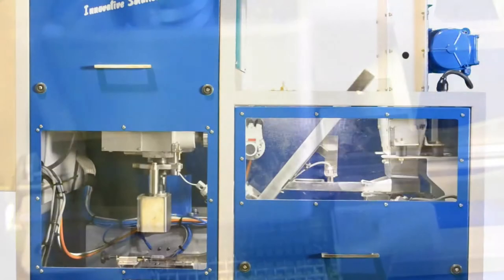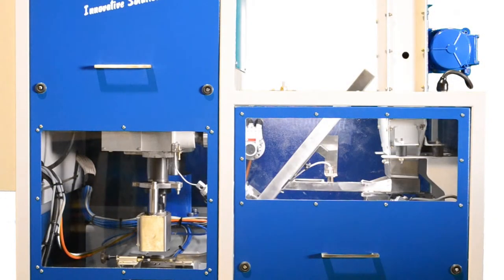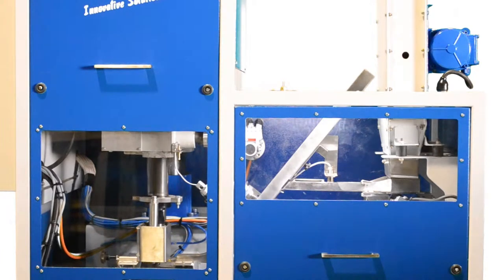The briquette is placed underneath the drill with the use of a pneumatic cylinder. Once the briquette is in place, the drill moves down with the assistance of a servo motor and starts drilling the sample.